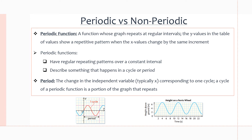Let's first look at periodic versus non-periodic functions. A periodic function is a function whose graph repeats at regular intervals, resulting in y-values in a table of values showing a repetitive pattern when the x-values increase at a constant rate. So if x increases by 1, y shows a repetitive pattern in its numbers. Periodic functions have regular repeating patterns and describe scenarios that happen in a cycle or a period.